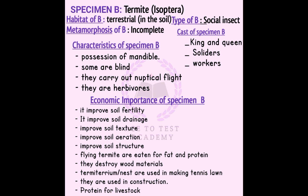Some of the flying termites can be eaten; they are rich in protein. They can destroy wood and structures. However, termite mounds can be used in construction — for example, to construct tennis lawns — and they provide protein for livestock.